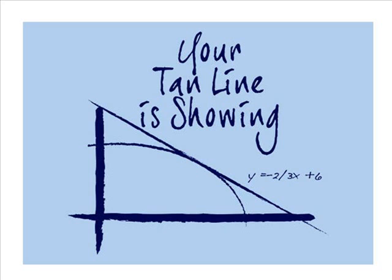A tangent line of a curve is a line that touches one point on the curve. The word tangent comes from the Latin tangier to touch. In geometry, the tangent line to a plane curve at a given point is the straight line that just touches the curve at that point.